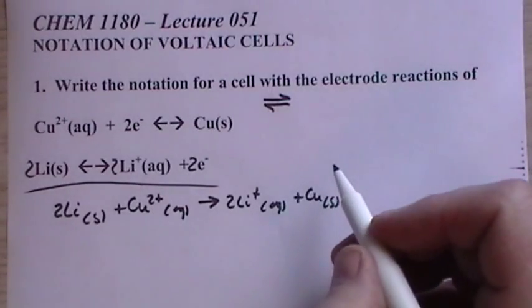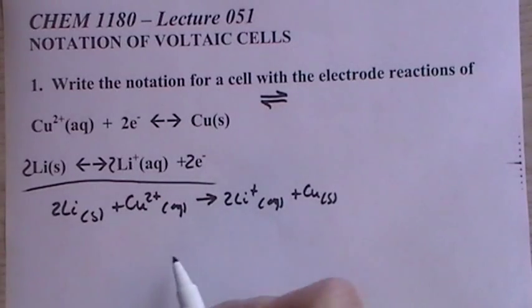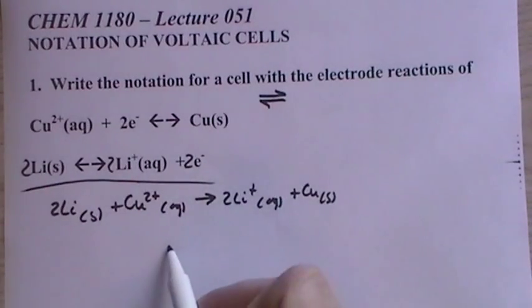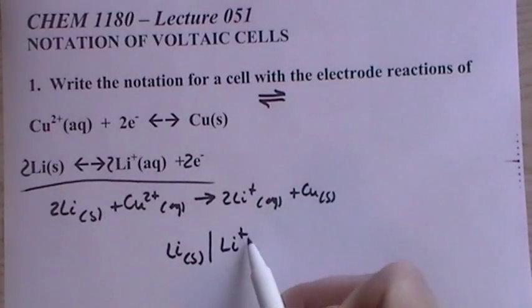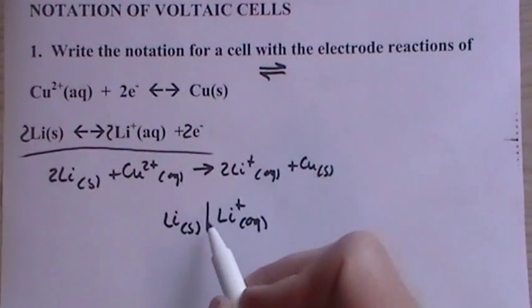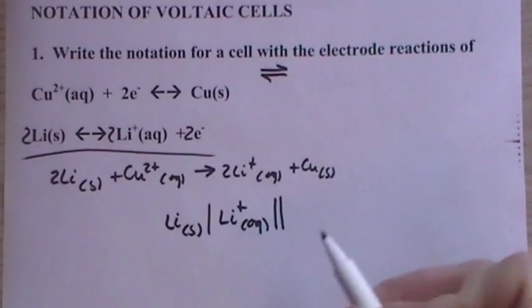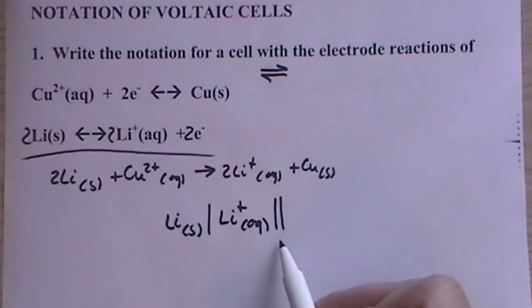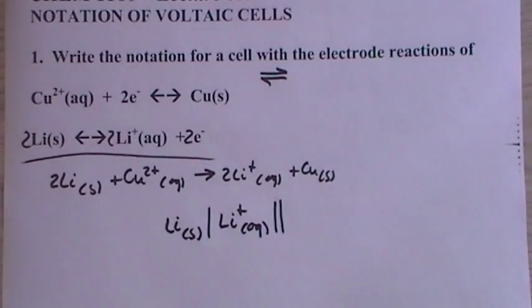Now, the cell notation—what we do is we put the oxidation on the left side and the oxidation is lithium solid goes to lithium plus. The single bar indicates that there is a phase change, so solid to aqueous. Then we put a double bar or a double line to indicate the salt bridge is present. We're going to always assume we have a salt bridge.